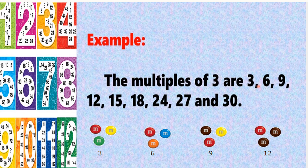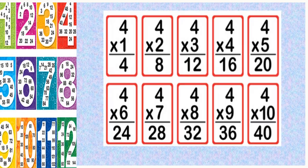Example: multiples of 3. Here I am doing: 3 1's are 3, 3 2's are 6, 3 3's are 9, 3 4's are 12 and so on. So I am getting the multiples of 3 as 3, 6, 9, 12, 15, 18 and so on.